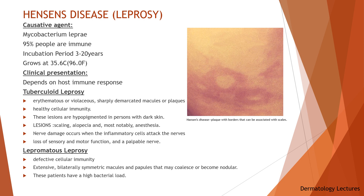Now we will discuss Hansen's disease, which is also known as leprosy. The disease is caused by the acid-fast bacillus Mycobacterium leprae, which is transmitted from person to person via droplets from the respiratory tract. Risk of transmission from casual and household contact is low. Although children are more vulnerable to infection than adults, 95 percent of people are immune to Hansen's disease. The incubation period can run from 3 to 20 years. Mycobacterium leprae grows best at 35.6°C and thus has a predilection for cooler parts of the body such as skin, peripheral nerves, and eyes, with sparing of the groin, axilla, and hairy scalp.